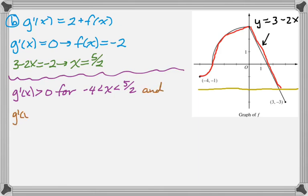And by the same kind of argument, I know that g prime is less than 0 when x is between 5 halves and 3. And you can see that because now f is less than negative 2. So when I add 2 to it, I'll still be negative. All right, so I've done that.